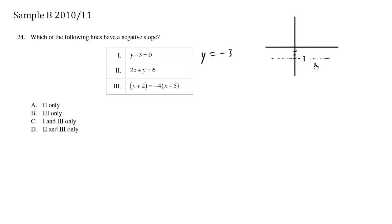The slope here, y equals negative 3, has a slope of 0. 0 is not negative, so this is incorrect.